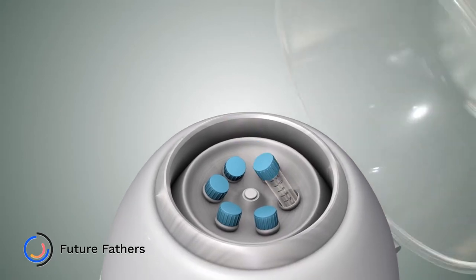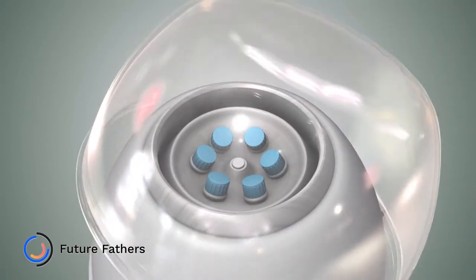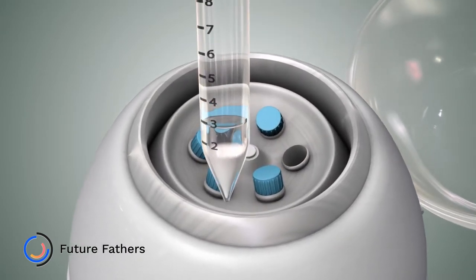Current methods of semen preparation involve high-speed centrifugation of semen in order to isolate a pellet of sperm at the bottom of a test tube.